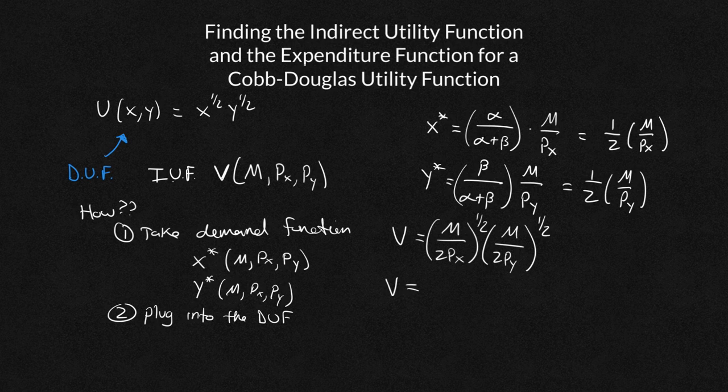So the numerator, you have M to the 1 half times M to the 1 half. Remember, our exponent rules, we have to add the exponents if we're multiplying them. So that's going to be just M to the 1, which is just M in my numerator. In the denominator, I have 2Px to the 1 half. I have 2Py to the 1 half. Well, that's going to get me 2 to the 1 half times 2 to the 1 half. That's just going to get me 2. And then I have a Px to the 1 half and a Py to the 1 half. I'm going to write this as the square root of Px times Py. So just a few small algebra things there for those of you who might not be up to date completely on your algebra.